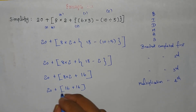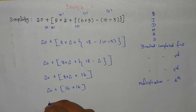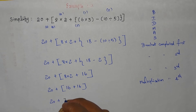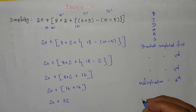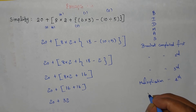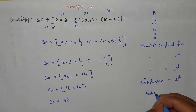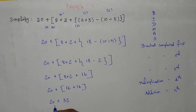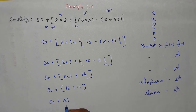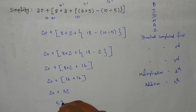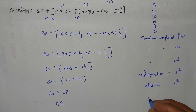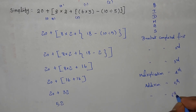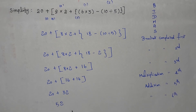That is why we use brackets. 20 plus 16, which gives 32. Addition completed. Finally, 20 plus 32 equals 52. Addition completed sixth. The expression result is 52.